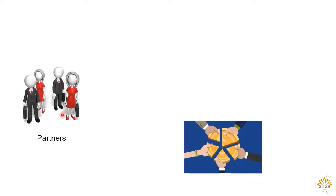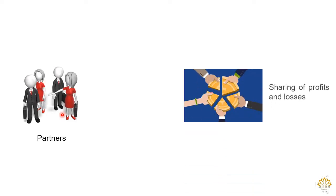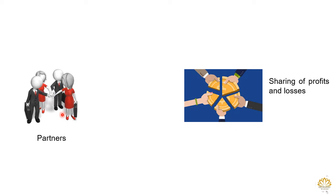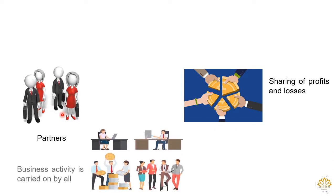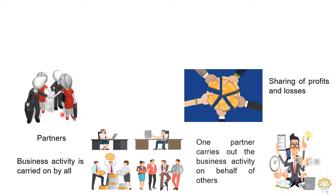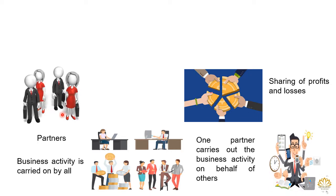Here you can see four persons who are going to start a business firm. They are going to do some business activity and each of them are going to contribute capital towards the business. These persons are known as partners and they have agreed to share the profits and losses arising from the business. All these partners can carry out the business activities together, or any one of the partners can carry out the business activity on behalf of the other partners.